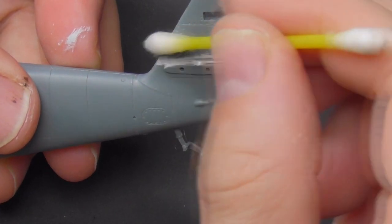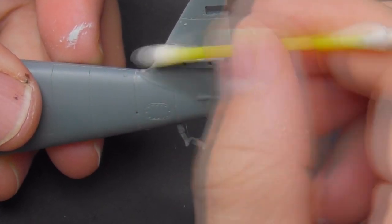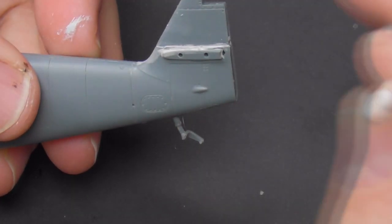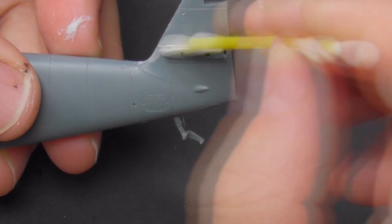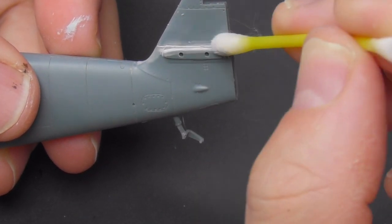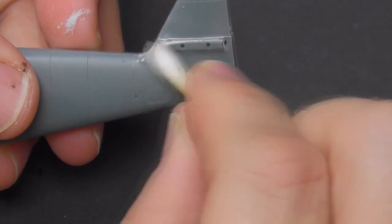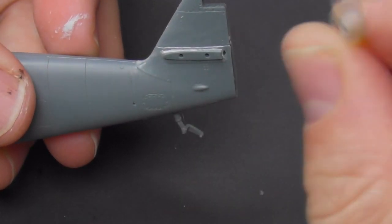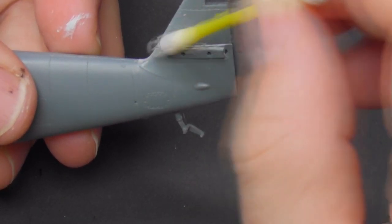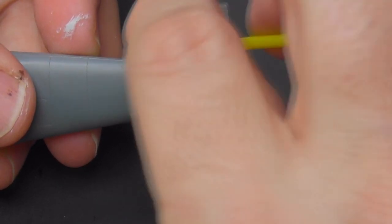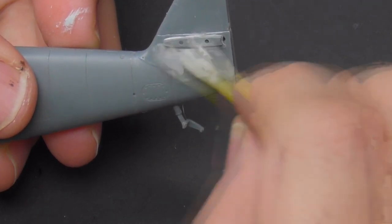So when it was dry, just went in with a cotton bud just moistened with some Mr. Hobby thinner and I just rubbed away the excess. Now I've learned to my cost, don't use the rapid thinner. That is really quite aggressive and that will attack the plastic. It's almost like neat lacquer thinner. The regular stuff is absolutely perfect.